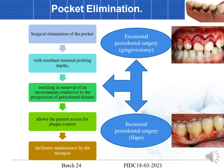Periodontal surgery can be performed by excisional periodontal surgery — gingivectomy — or by incisional periodontal surgery with the help of flaps. Pocket elimination involves surgical elimination of the pocket with resultant minimum probing depths: a 7 mm pocket can be brought down to 2–3 mm, removing the environment conducive to periodontal disease progression. This allows the patient access for proper plaque control and also facilitates maintenance by the therapist.